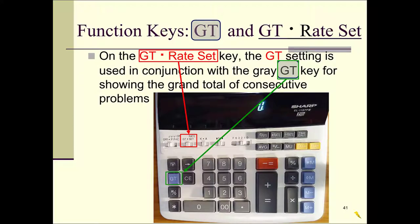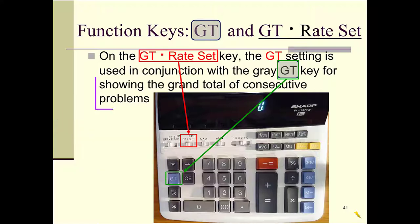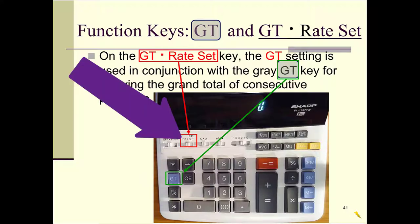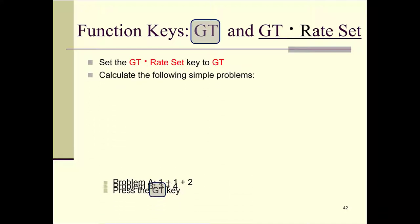Now we're going to learn about the grand total function. The grand total function is the GT key on your calculator. It will show you the grand total of consecutive problems that you may have done. You also need to find the GT/rate-set key on your calculator, because that will be the first thing we need to set. Set the GT/rate-set switch to GT, which of course means grand total.